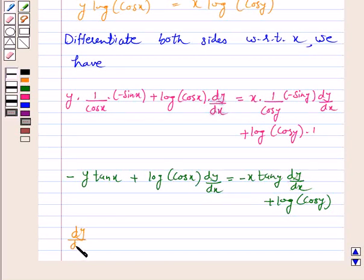dy/dx · [log(cos x) + x tan y] = log(cos y) + y tan x.